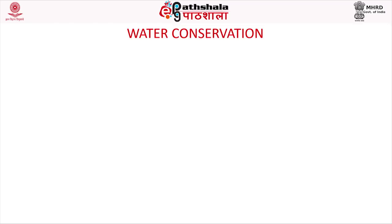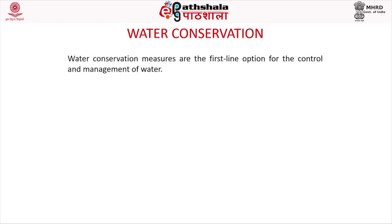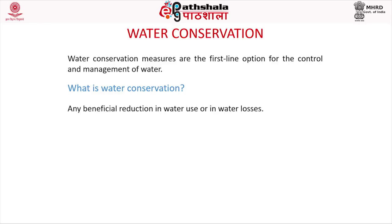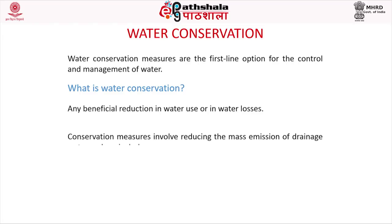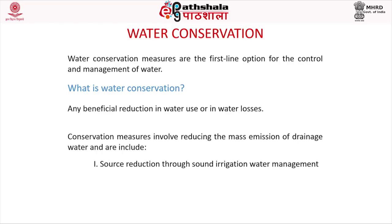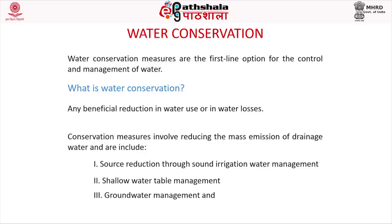What is water conservation? Water conservation measures are the first line option for the control and management of water. Any beneficial reduction in water use or in water losses is defined as water conservation. Conservation measures involve reducing the mass emission of drainage water and include: source reduction through sound irrigation water management, shallow water table management, groundwater management, and land retirement.